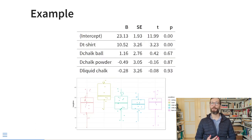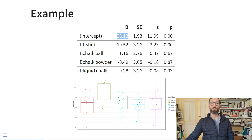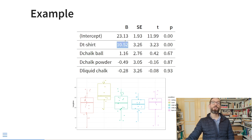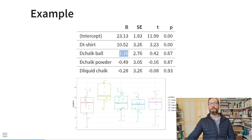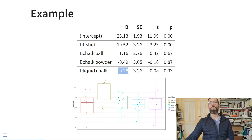Here is some example output from that linear regression. The mean hang time in the group that did nothing was about 23 seconds. The effect of wiping on a t-shirt was 10.5, meaning people who wiped on their t-shirt hung on average about 10.5 seconds longer. People who used a chalk ball hung on average 1.16 seconds longer. For people who used chalk powder or liquid chalk, the difference was actually negative: chalk powder was minus 0.5 seconds, liquid chalk was minus 0.3 seconds.